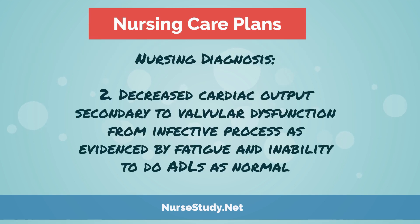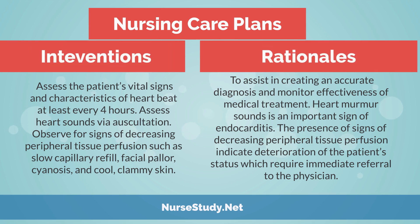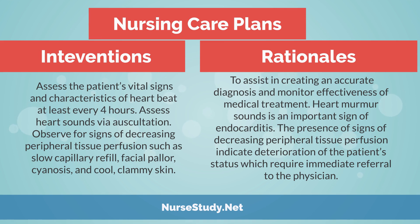Nursing care plan number 2. Nursing diagnosis: decreased cardiac output secondary to valvular dysfunction from infective process, as evidenced by fatigue and inability to perform ADLs as normal. Intervention: assess the patient's vital signs and characteristics of heartbeat at least every 4 hours; assess heart sounds via auscultation; observe for signs of decreasing peripheral tissue perfusion such as slow capillary refill, facial pallor, cyanosis, and cool clammy skin. Rationale: to assist in creating an accurate diagnosis and monitor effectiveness of medical treatment. Heart murmur sounds are an important sign of endocarditis. Signs of decreasing peripheral tissue perfusion indicate deterioration requiring immediate referral to the physician.